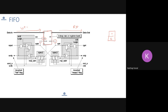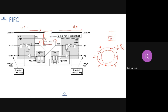The FIFO pointers are considered circular. Think of it this way: this is address zero, address one, address two, address three, address four — and then you come back to zero. You have read pointers and write pointers. Initially they point to zero. As you write data, the write pointer moves forward, and the read pointer points to the address from which you should be reading next.